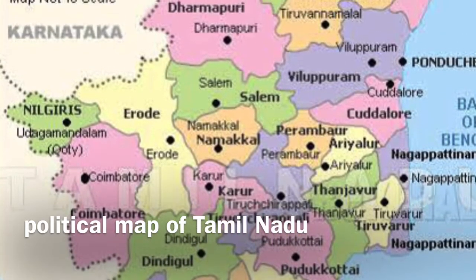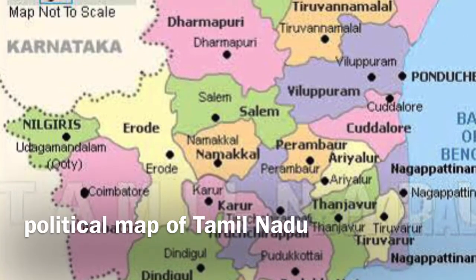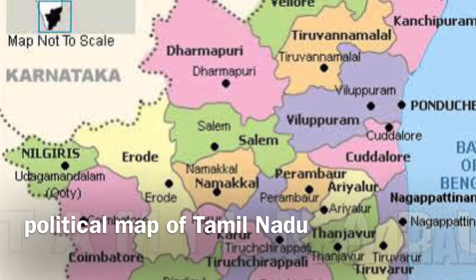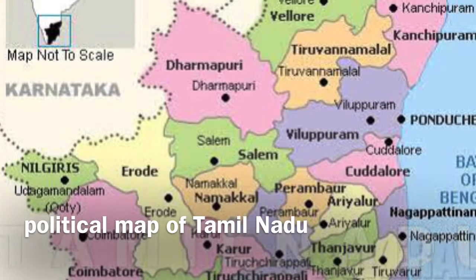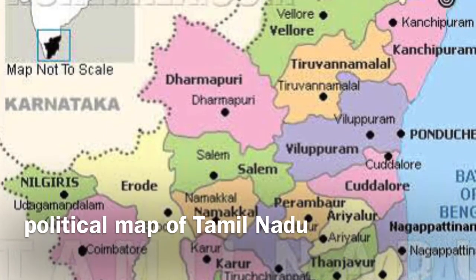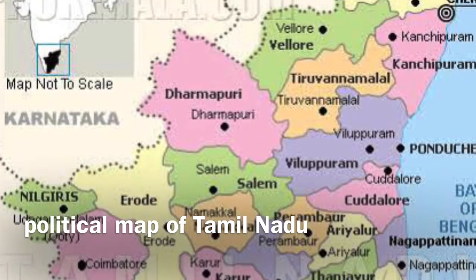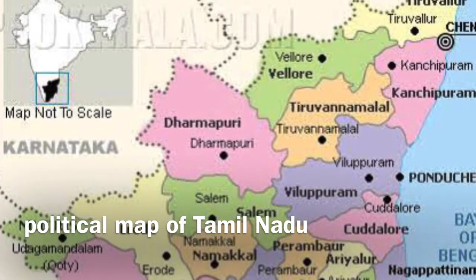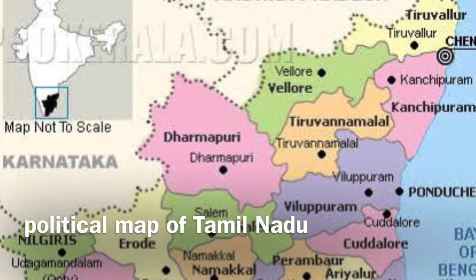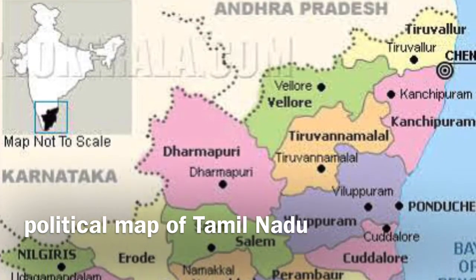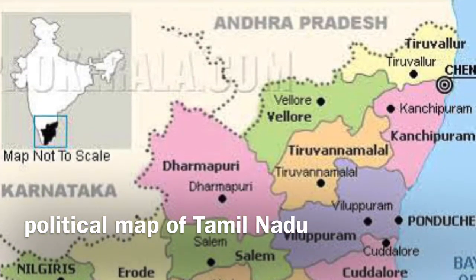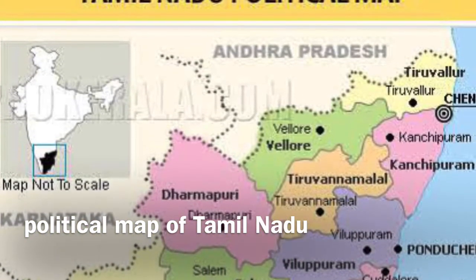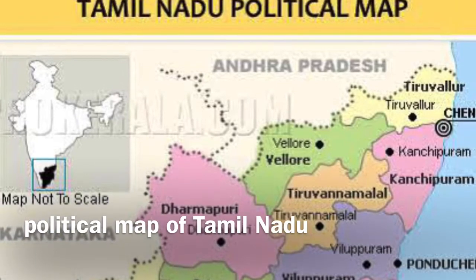In terms of administrative divisions, there are presently 37 districts in Tamil Nadu, including the newly created ones such as Kallakurichi, Tenkasi, Chengalpat, Ranipet, and Tirupattur.